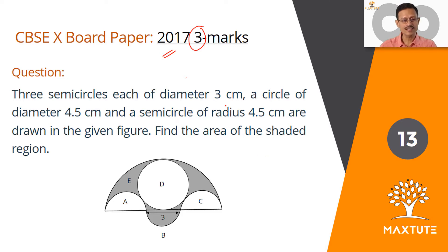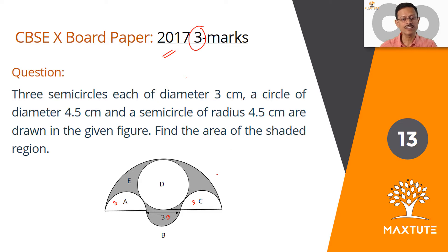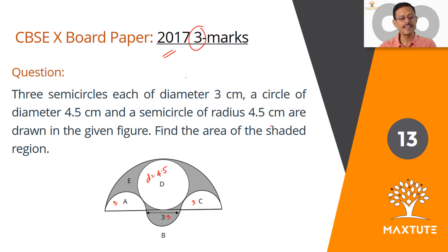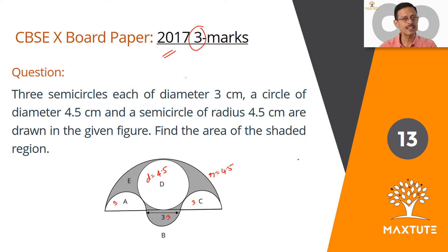Three semicircles, each of diameter three centimeters — this is three centimeters, three centimeters, and three centimeters. A, B, and C are the three semicircles of diameter three centimeters. A circle D of diameter 4.5 centimeters, and a larger semicircle E of radius 4.5 centimeters are drawn in the figure given below. Find the area of the shaded region.